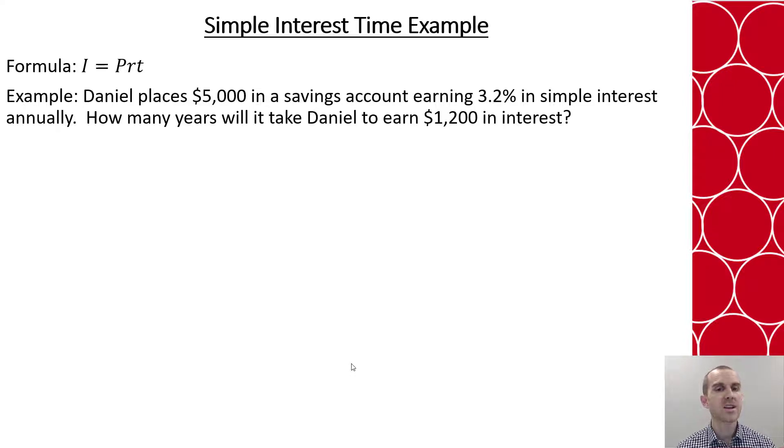What if you wanted to calculate time instead? We can still calculate it. We just have to have different information. So whenever we have a simple interest problem, we'll get 3 of the 4 items and we solve for the missing quantity.